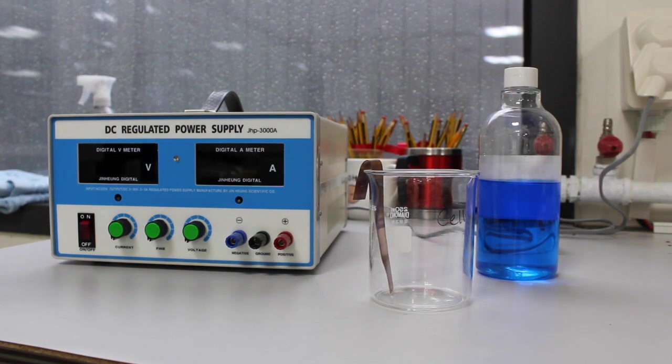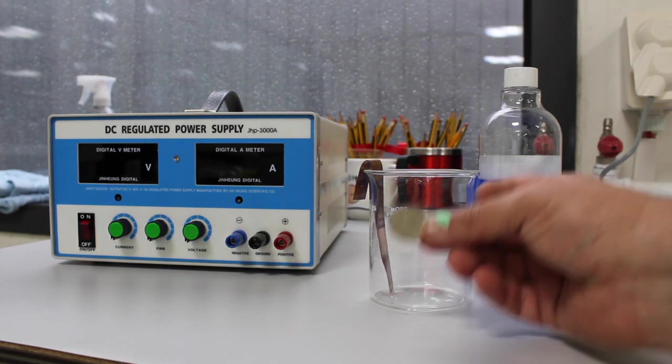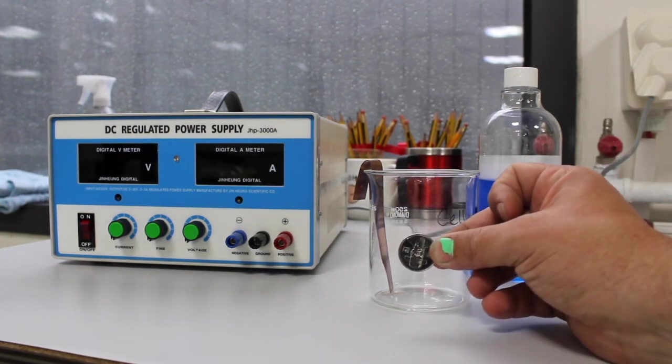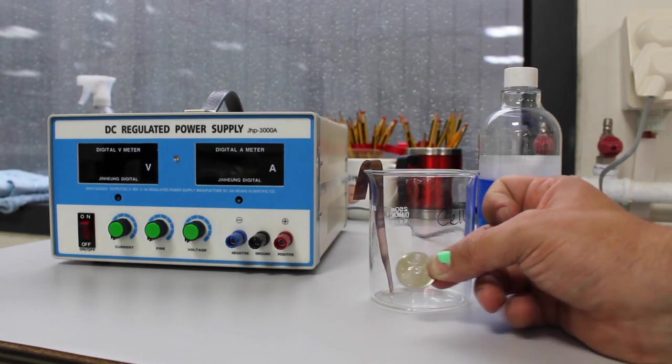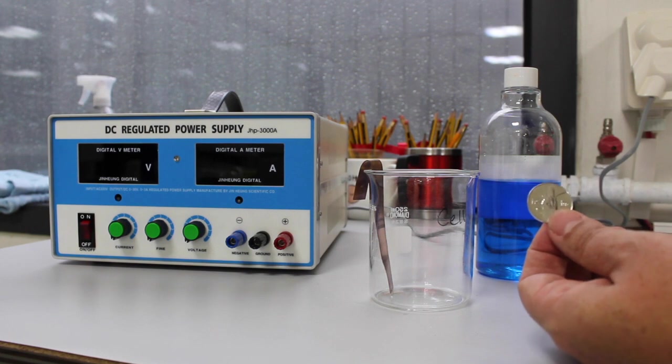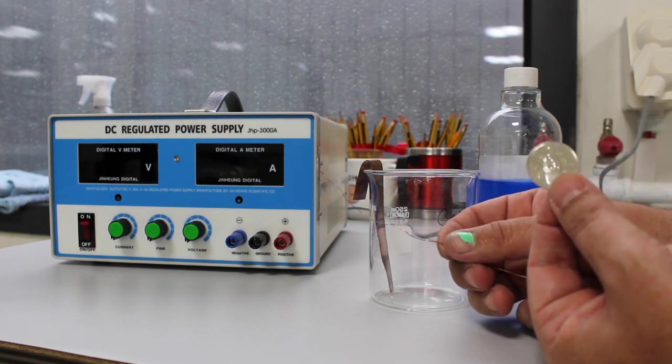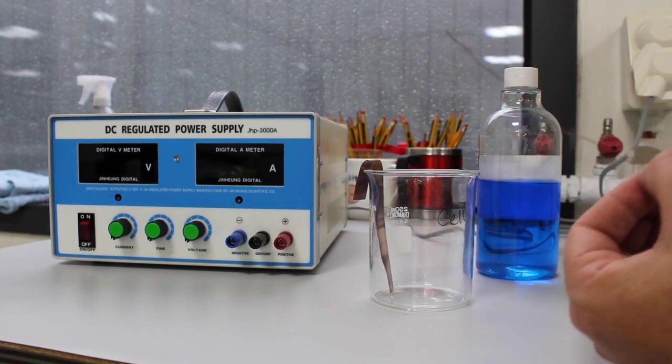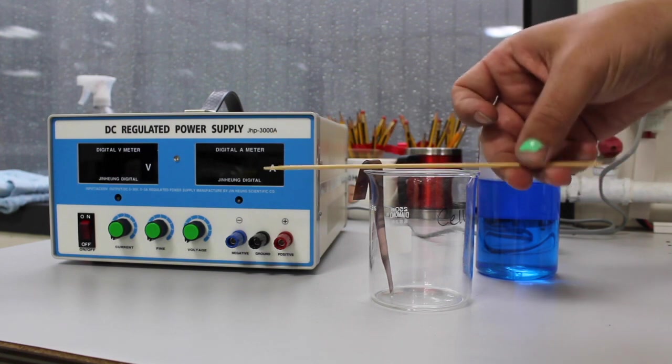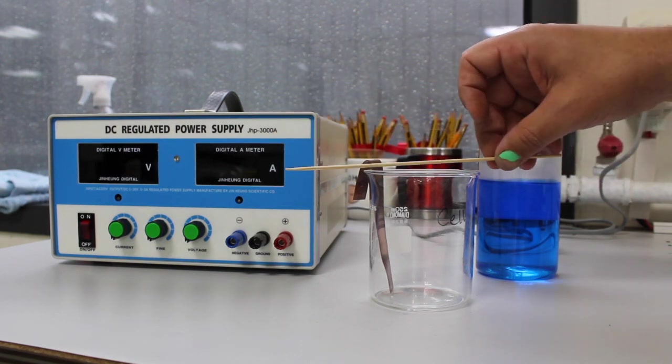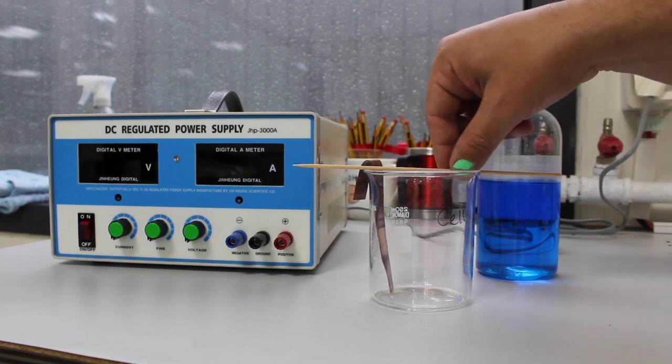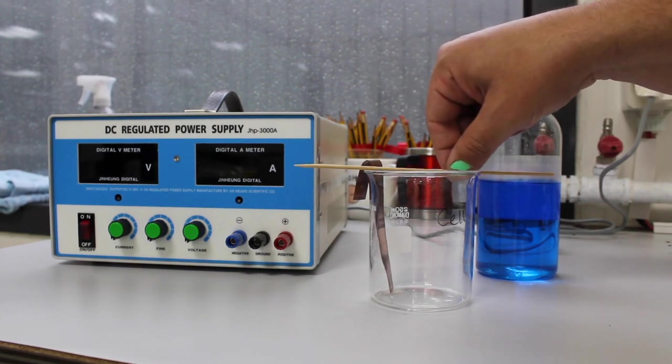Our second electrode is the coin itself. So we need to dangle this coin in our solution. We don't want it to touch anything else. So we are going to wrap it in some wire. Since we are plating with copper, I am going to use a little bit of copper wire. I am going to dangle it from a wooden bamboo splint. You can use a wooden splint or a pencil or whatever you have that is not conductive, and we will dangle the coin off of this into the solution.